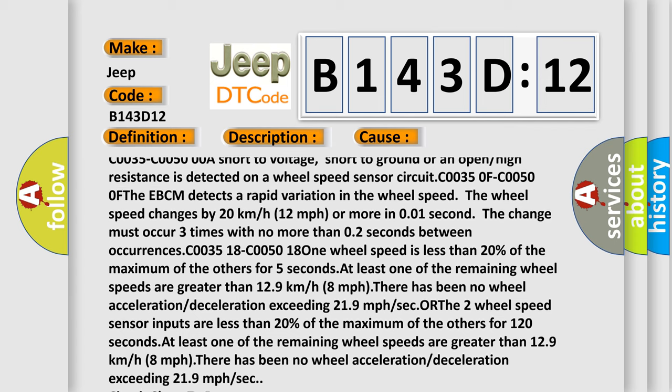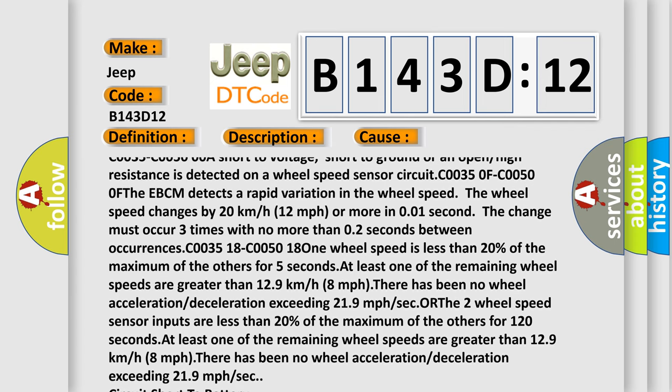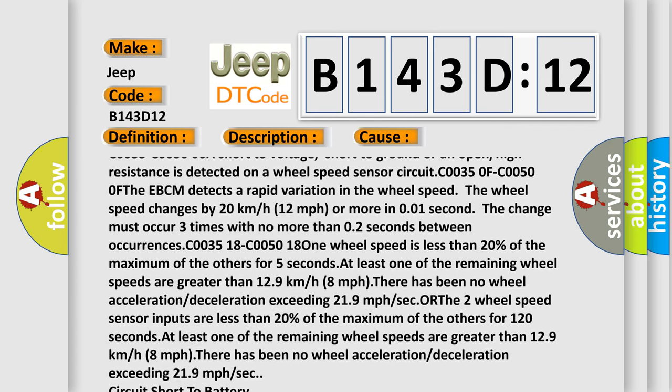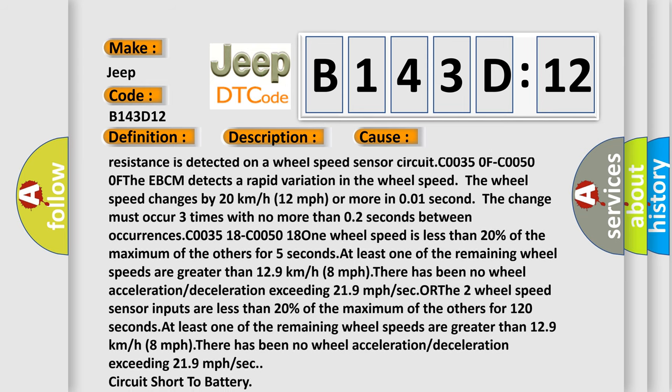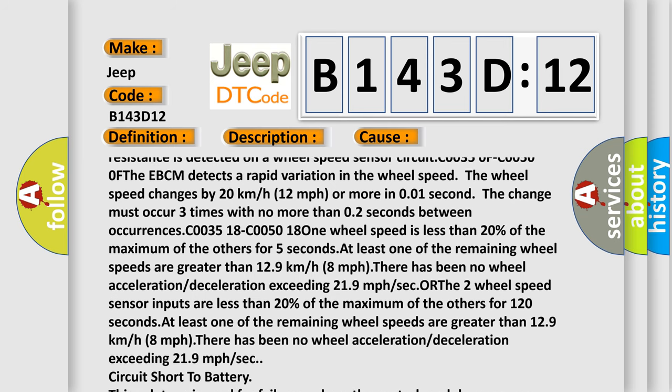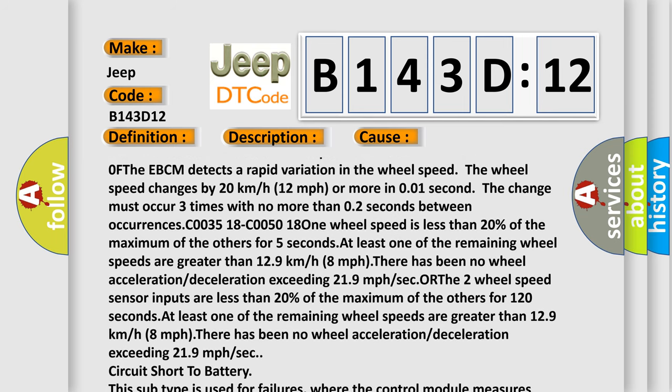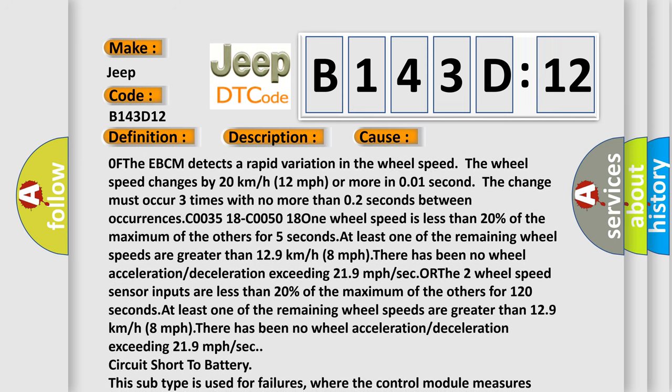C00350F C00500F: The EBCM detects a rapid variation in the wheel speed. The wheel speed changes by 20 km/h, 12 mph or more in 0.01 second. The change must occur three times with no more than 0.2 seconds between occurrences.